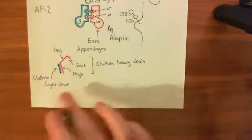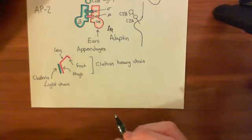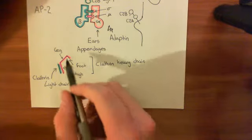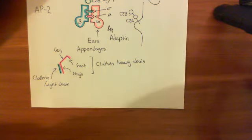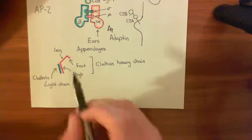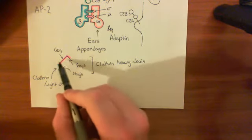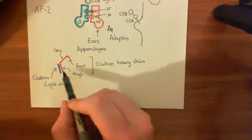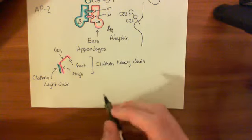A clathrin light chain and a clathrin heavy chain associate to make a dimer. Now let's do the proper names for the different portions of the clathrin heavy chain. When people refer to clathrin, they probably are talking about the clathrin heavy chain — if they just say clathrin without clarification, they'll mean the clathrin heavy chain.